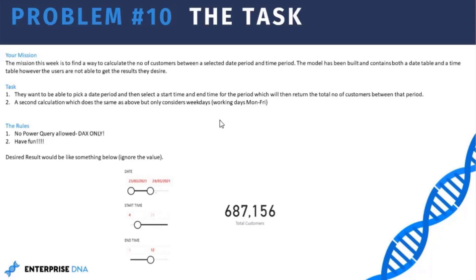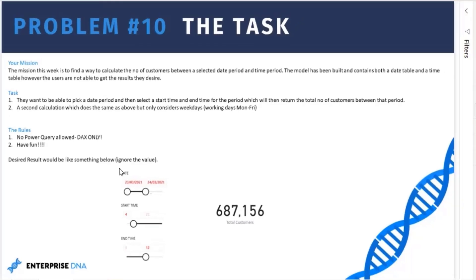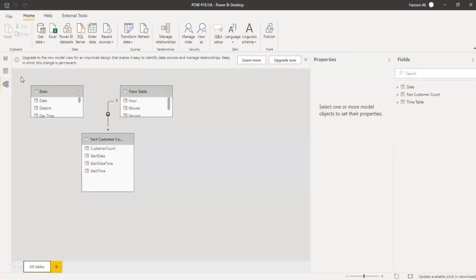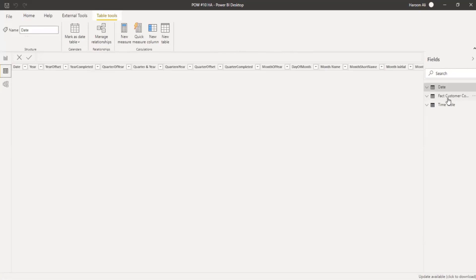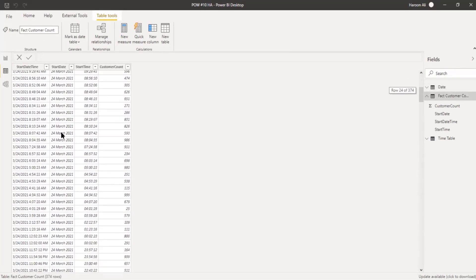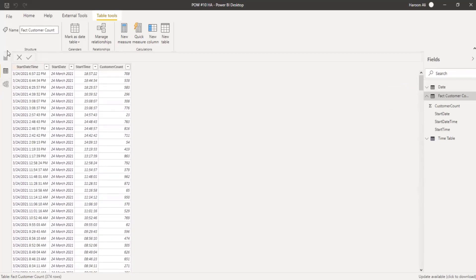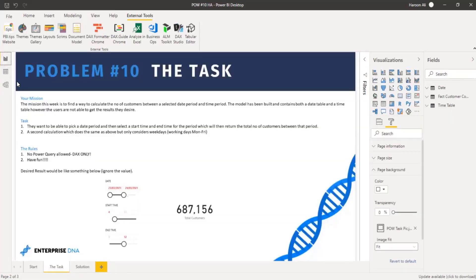The problem has two parts. The first task is filtering between a date period and a time period selected — when you've picked a start and end time, just give me a sum of the total customers. The second part is to trim that down so you're only getting working days, which for this example we use Monday to Friday. The model has been built with some dummy data in the fact table — enough for us to tackle this problem.